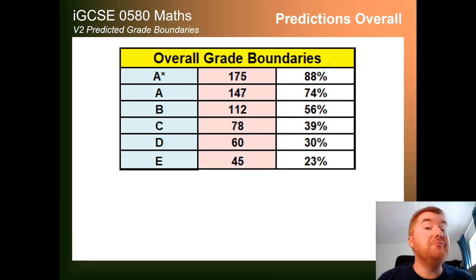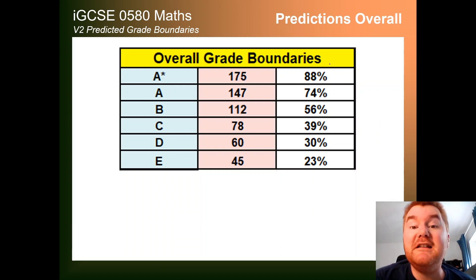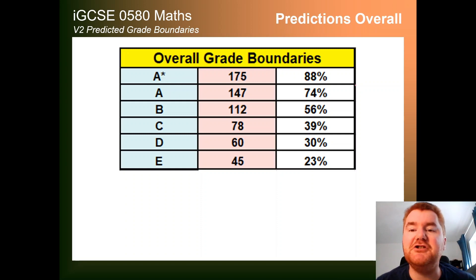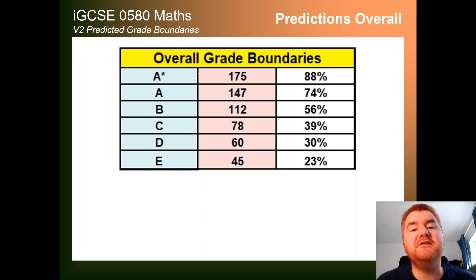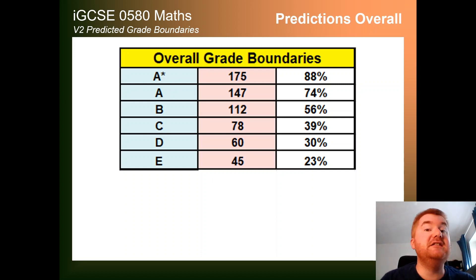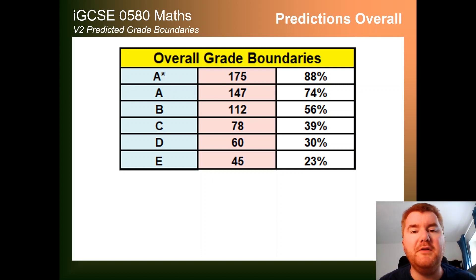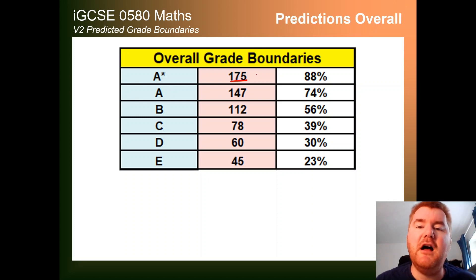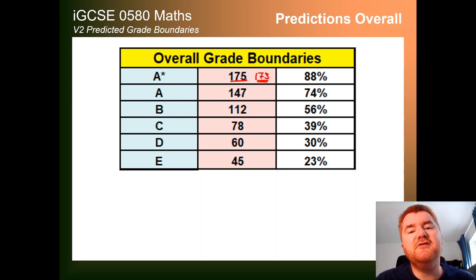Now this is probably what you've been waiting for, which is the overall grade boundaries. This is out of 200, so I've put the percentages here as well. The A-star is always the most difficult to predict, because that's based on the entire cohort, not necessarily one paper or the other. Last year we're talking a grade boundary of about 173, so we're talking 175.